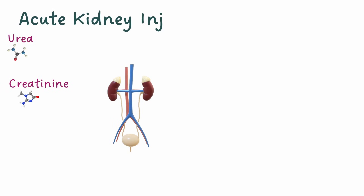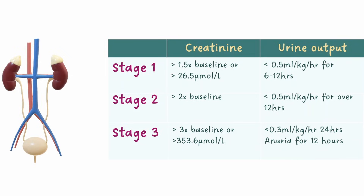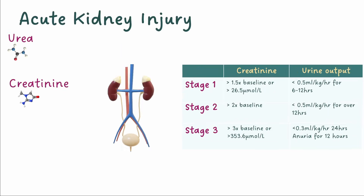Acute kidney injury occurs when there's a reduced kidney function that happens over hours or days, measured by increased creatinine or reduced urine output. We can use these measurements to determine the stage of AKI, with stage 3 being the most severe. It's important to compare the current creatinine level to the patient's older levels to establish their baseline and help work out the stage.